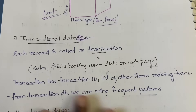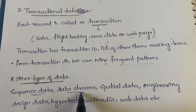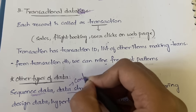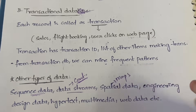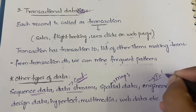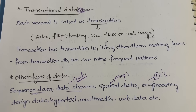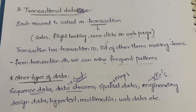After transactional data, we have other types of data as well. Sequence data means stock market related data. Data streams is data which is continuously being transmitted. Spatial data is nothing but maps. Engineering and design data includes things like integrated circuits. We also have hypertext, multimedia — audio, video — and web data like webpage-related data. These are the other types of data that can be mined.